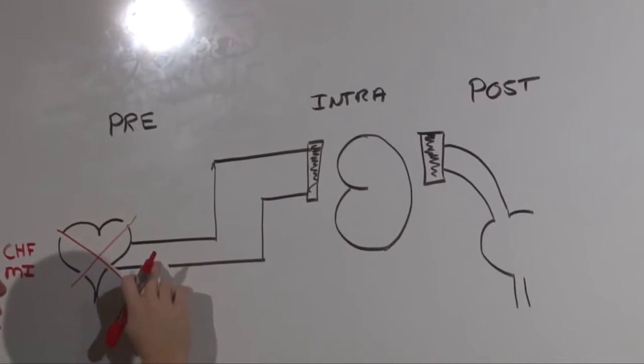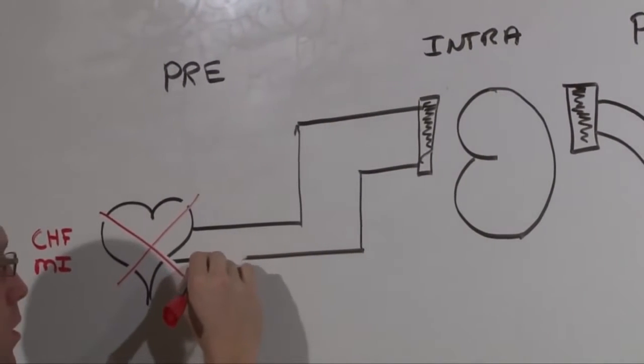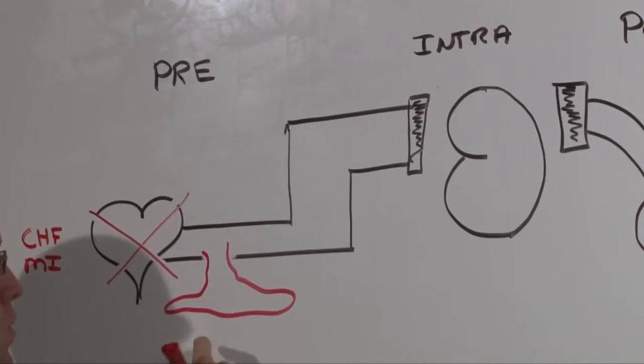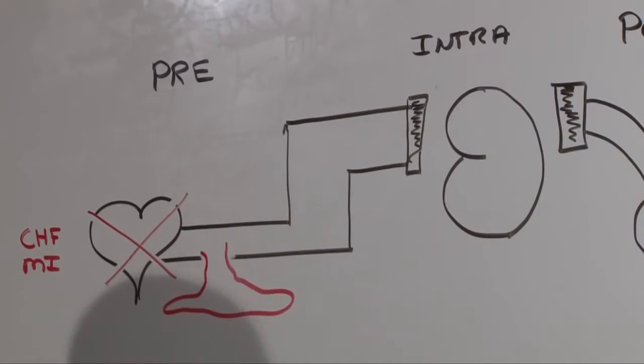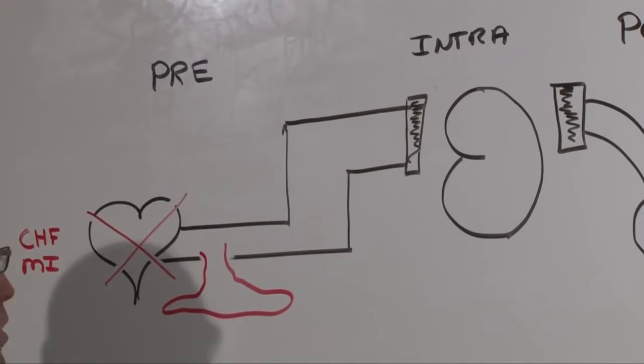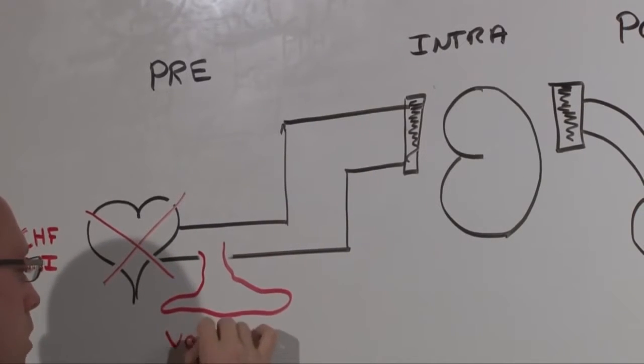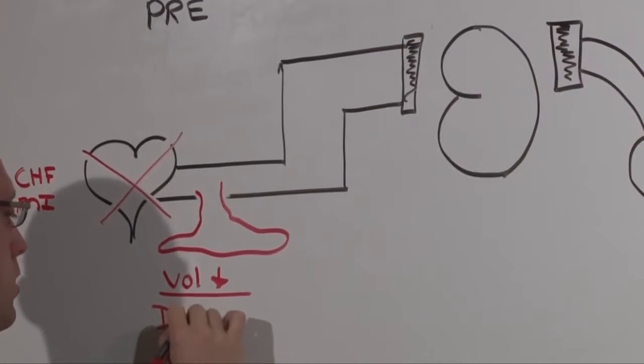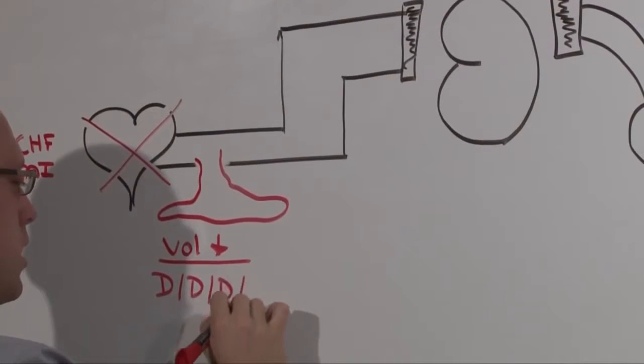You could have a hole in the tank with just all this fluid coming out. If you didn't have enough volume to fill the pipes, kidneys wouldn't be perfused. This is a state of being volume down and that is the four D's: diarrhea, dehydration, diuresis, and hemorrhage.